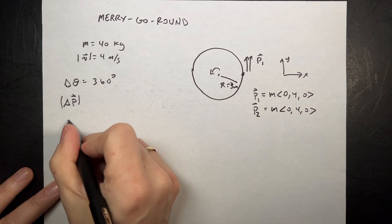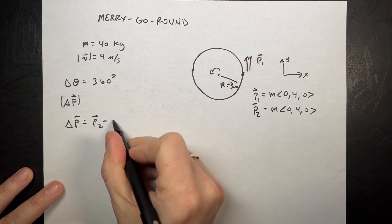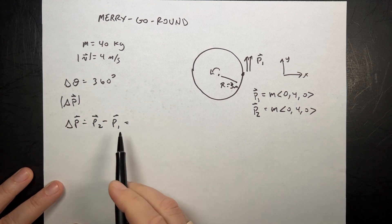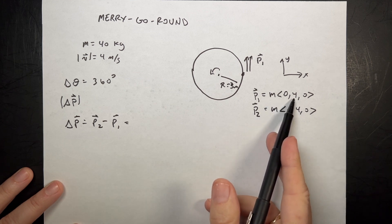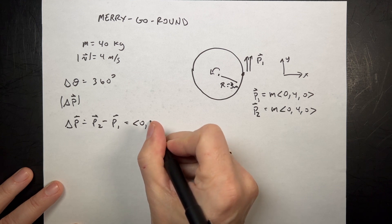So now let's do delta P. Delta P is going to be equal to P2 minus P1. So let's do that vector subtraction. I'm going to multiply the 4 in here. So I get P2 is 0, I guess, 4M, 0.